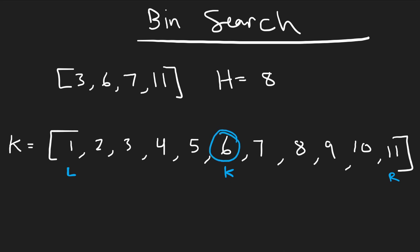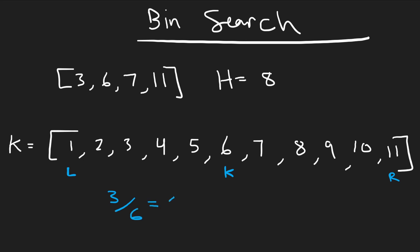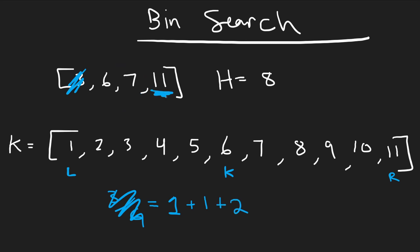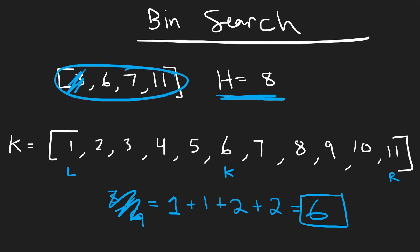With k equals 6, can we eat all bananas in at most eight hours? First pile: ceil(3/6)=1 hour. Second pile: ceil(6/6)=1 hour. Third pile: ceil(7/6)=2 hours. Fourth pile: ceil(11/6)=2 hours. Total: 6 hours — that's less than or equal to 8, so it works.